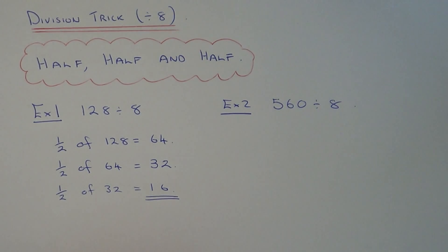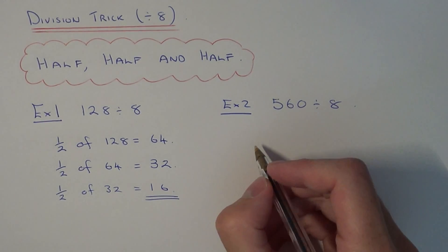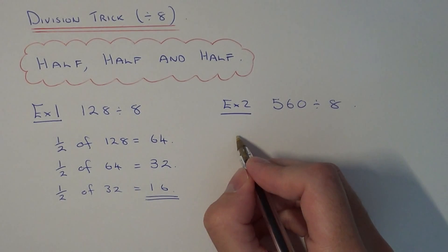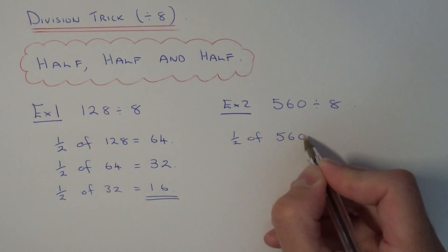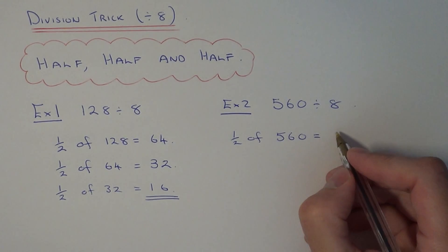Let's look at one more example. This time we've got 560 divided by 8. The first step is to do half of 560, which gives you 280.